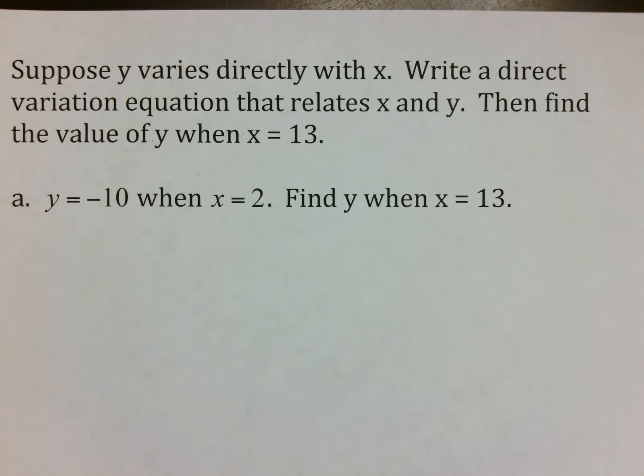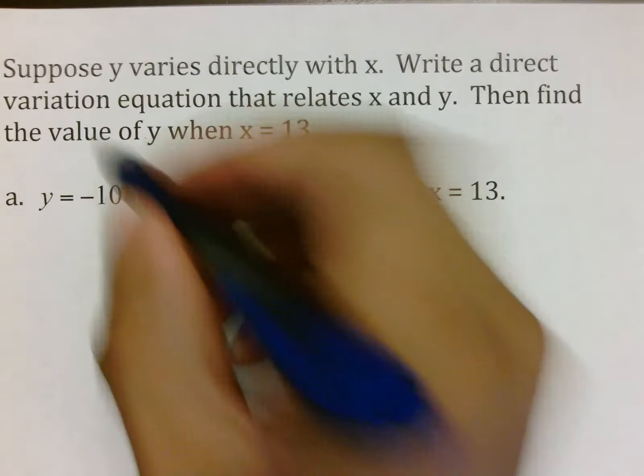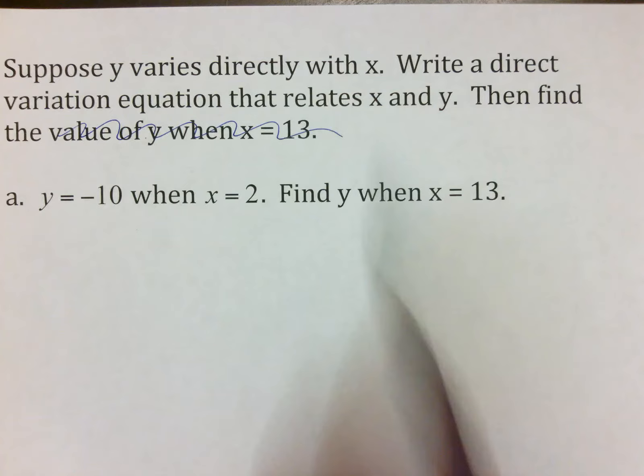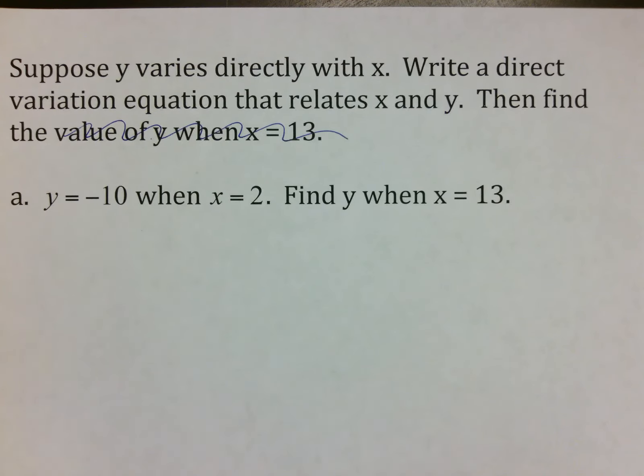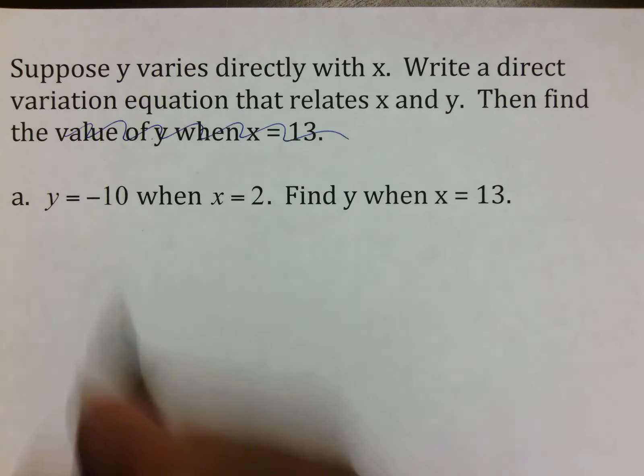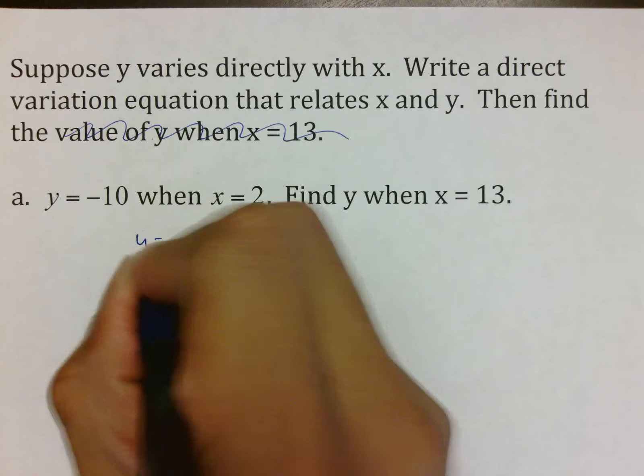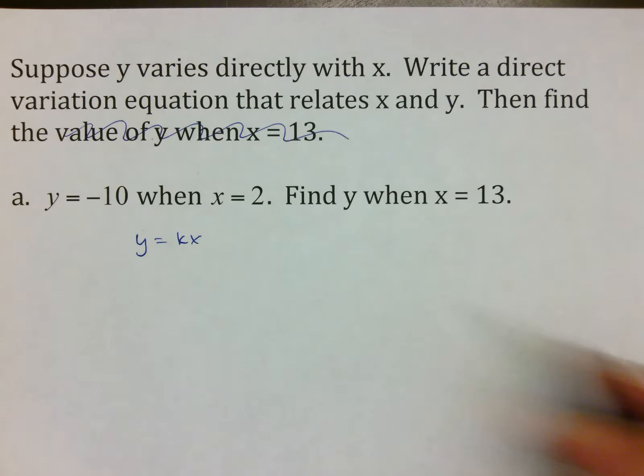It's going to say in all these questions, suppose y varies directly with x. Write a direct variation equation that relates to x and y, then find the value of y. So once it says y varies directly with x, that means we put y equals kx. And you're going to have to actually write all these steps on your computer. So you might want to write them and keep them in mind. Because I need to make sure you at least have it down. Whether you don't like it or do like it, I need to at least prove that you have done enough.